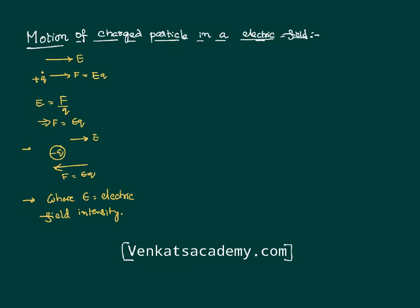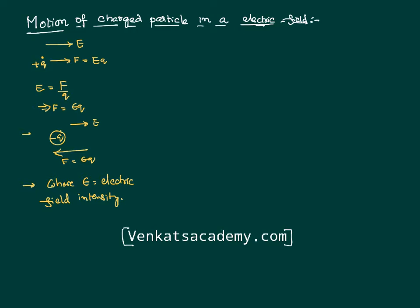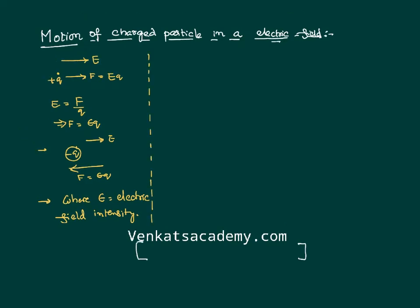Now, let us consider a scenario where a charged particle is moving in the horizontal direction with initial velocity U. This charged particle has a certain mass M and charge Q. We have started applying an electric field like this.